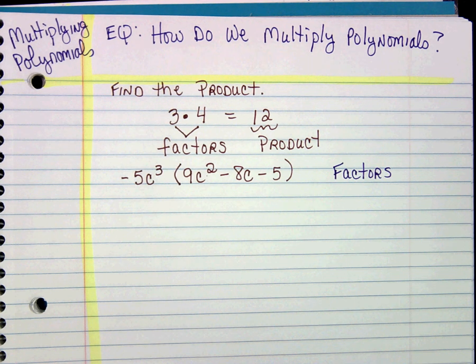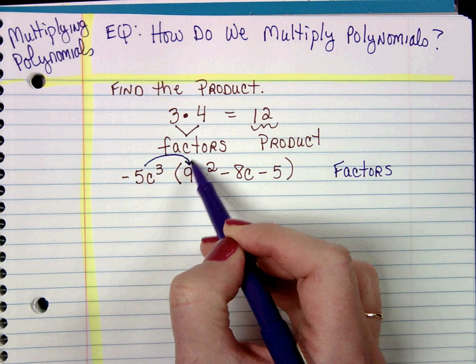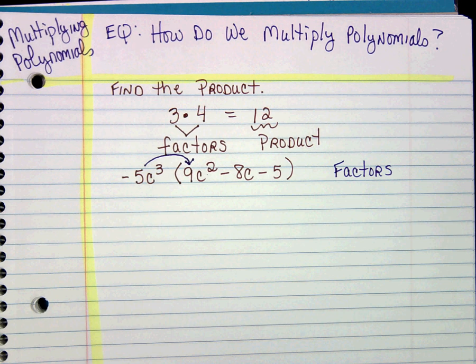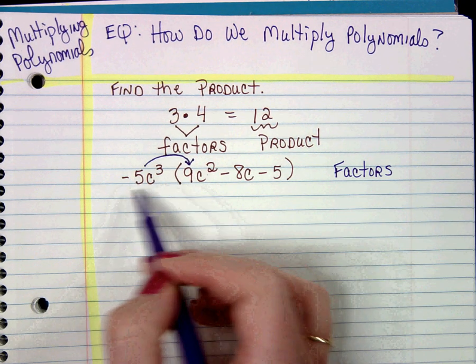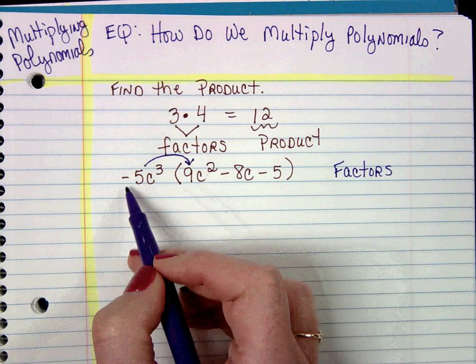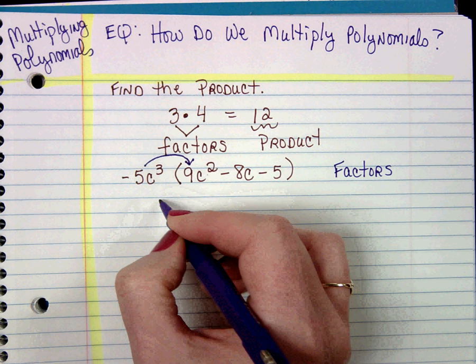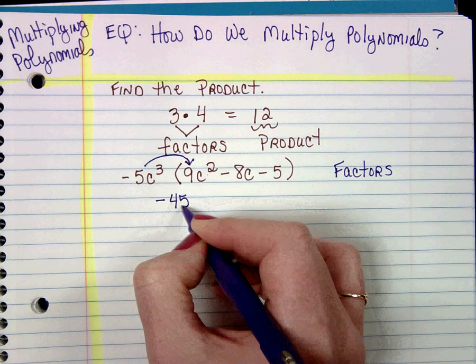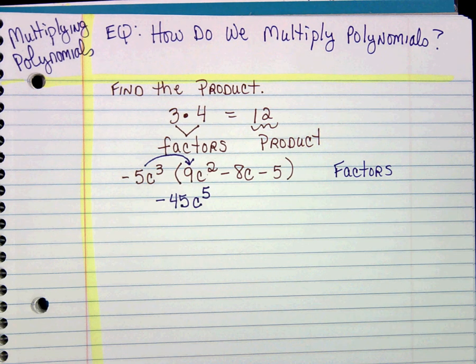Hopefully when you look at this, you're just like, oh wow, that's easy. All we have to do is distribute. This is why we learned our exponent rules. Remember, it's okay to multiply when they're not like terms. Negative 5c cubed times 9c squared would be negative 45c to the fifth. We multiply our number of bases, we add our exponent.